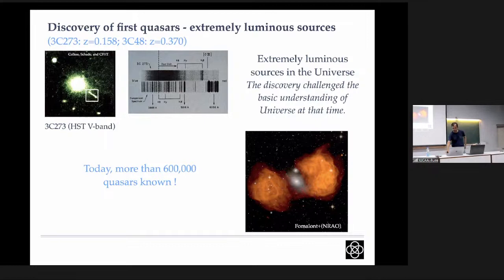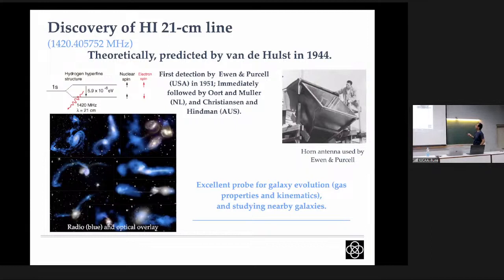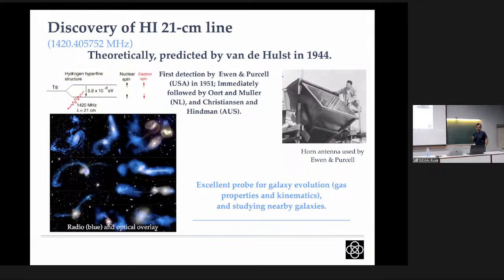The HI 21-centimeter line was predicted theoretically by van de Hulst in the Netherlands in 1944, working with Jan Oort. As soon as it was predicted, astronomers were eager to detect it, since spectral lines carry unique information: redshift, and the kinematics of the gas embedded in. Hydrogen is also the most abundant element. The first detection was made in 1951, and within a year other groups in the Netherlands and Australia also detected it. It is now an excellent tool for galaxy evolution studies.